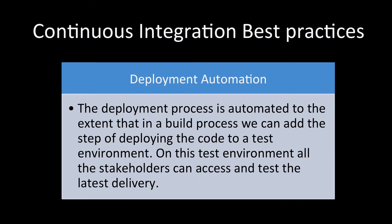Then we have deployment automation. Since CI can go all the way up to deployment in the build script, we must automate the deployment process. In the build process, if we need to deploy to certain servers, we can integrate that step — deploy the code to a test environment, run all the tests, and once done, all stakeholders can see the results.